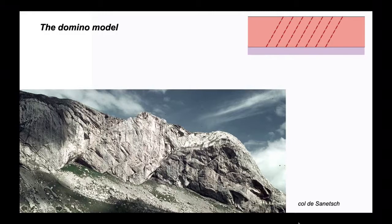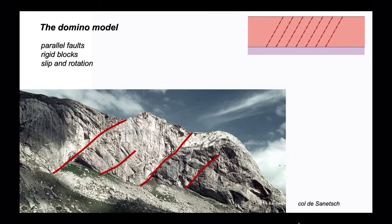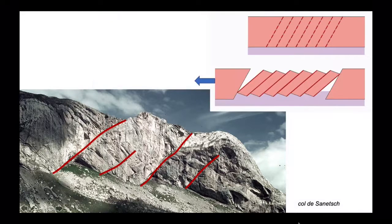This notion is implicit in something called the domino model. For the domino fault model, we say that the faults are planar structures separating rigid blocks, which are the dominoes. So parallel faults separate rigid blocks, and the faults both slip and the fault blocks rotate as stretching occurs.